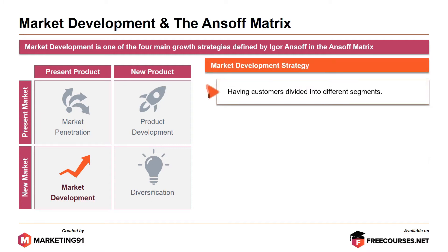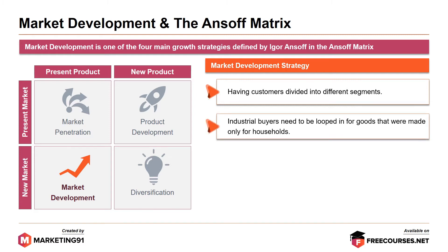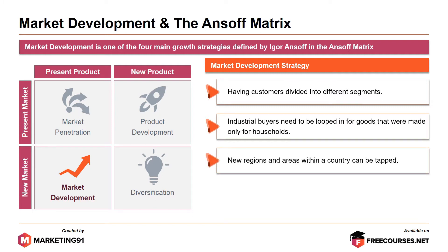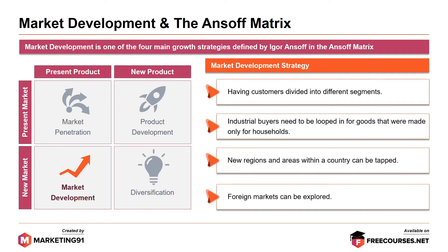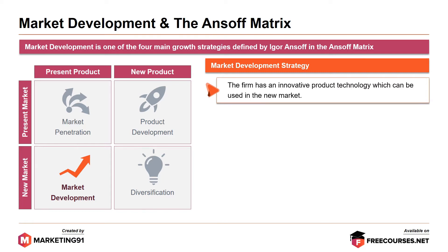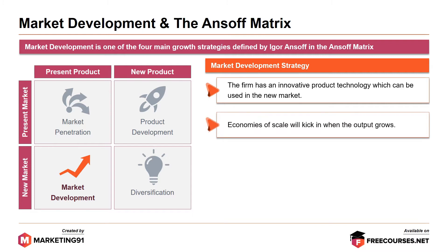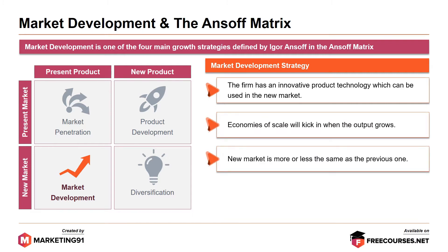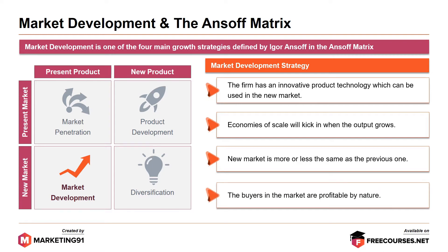Market development, as stated, is one of the four main growth strategies, which entails having customers divided into different segments. Industrial buyers need to be looped in for goods that were made only for households. New regions and areas within the country can be tapped, and foreign markets can also be explored. The firm should have an innovative product technology which can be used in the new market. Economies of scale will kick in when output grows and the new market is more or less the same as the previous one. The buyers in the market should be profitable by nature.